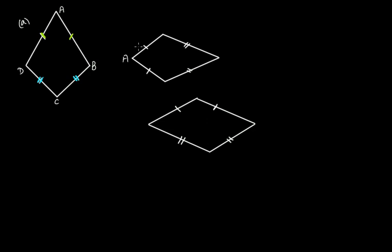In the next figure, naming the vertices A, B, C, and D: the single marks tell that AB equals AD, forming a pair of equal consecutive sides. Similarly, CB and CD are marked with double lines, telling that these two sides are equal to each other. This pair of consecutive sides is also equal — so yes, this is also a kite. The same applies to the next figure: one pair of consecutive sides is equal and the other pair is also equal, making it a kite.